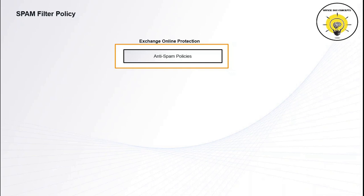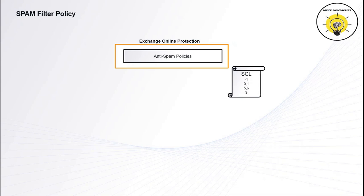When spam filter policies scan an email, it stamps an SCL value and spam filtering verdict within the email header. SCL minus 1 indicates that filtering was skipped on the email as it was an internal email. SCL 0 to 1 indicates the email is not marked as spam. SCL 5 to 6 indicates the email is marked as spam. SCL 9 indicates the email is marked as high confidence spam.